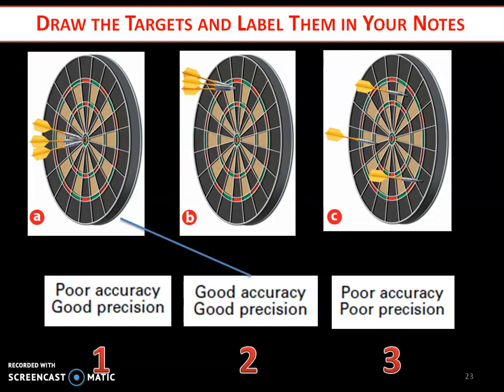So hopefully this makes sense. So A is very good accuracy because they're hitting the target, but it's also good precision because all three of them are hitting the target. B, on the other hand, is poor accuracy because none of them are hitting the target, but they're very precise because all those measurements, all of those darts are hitting the same area. And then, of course, C that's not accurate nor precise, because they're all over the place. So those are the kinds of values or those are the kinds of results that you can get in lab. So pause, make sure you're drawing some kind of target and then labeling each one accordingly.